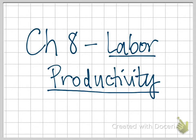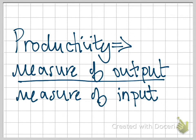This is Professor Hildebrandt with an example from Chapter 8 on labor productivity. In this chapter we talk about a lot of different types of productivity, but productivity is simply some measure of output divided by a measure of an input. We can look at a lot of different kinds of productivity in terms of our resources — how productive our capital is, how productive our natural resources are — but most firms really focus on labor productivity.